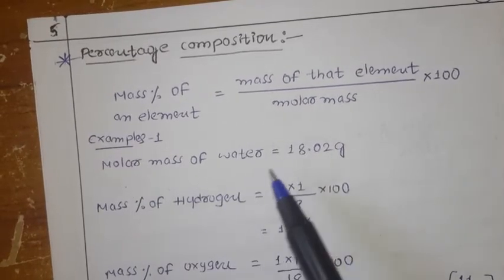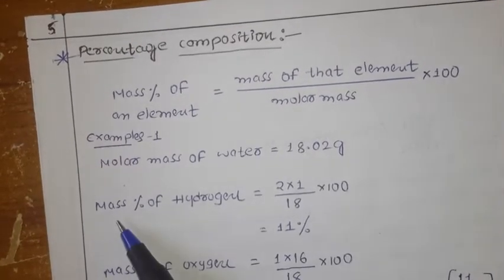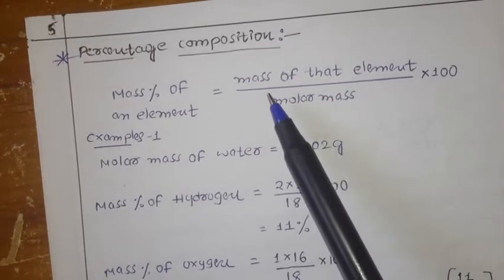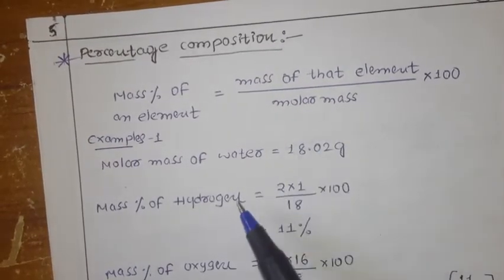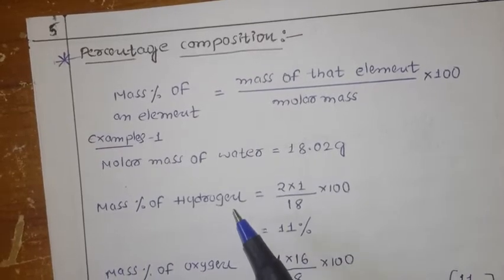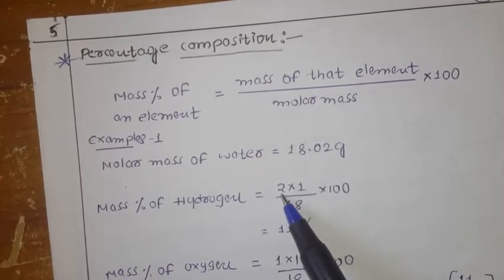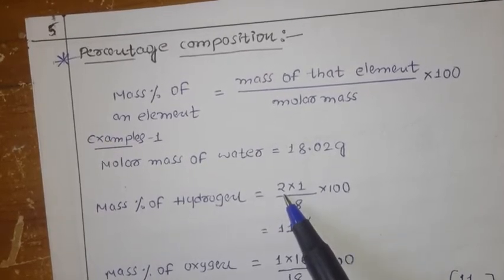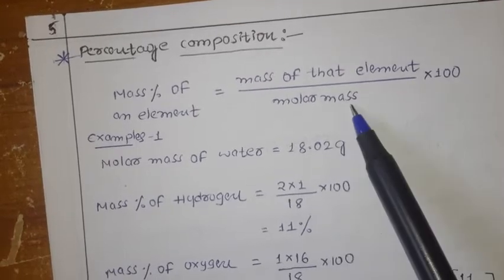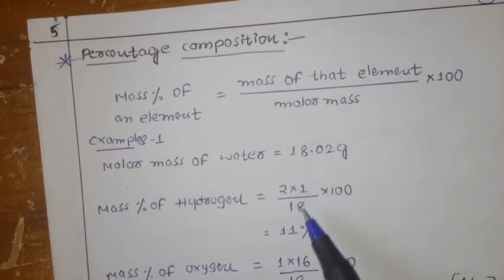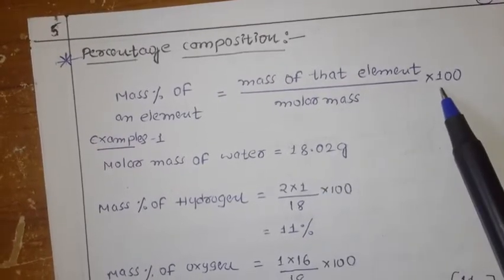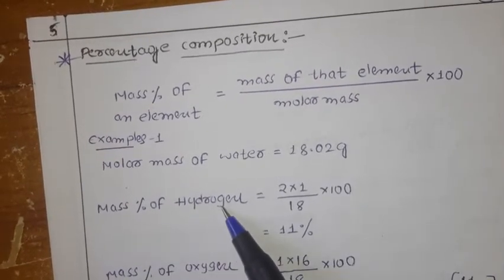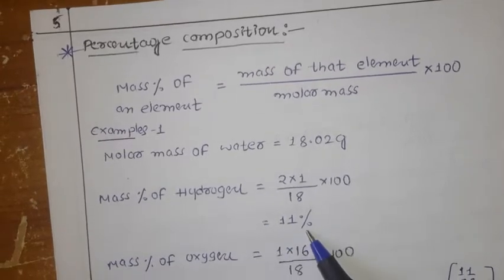The total molar mass of water is 18. Now, the mass percentage of hydrogen: the formula is mass of that element divided by molar mass into 100. Mass of hydrogen — there are 2 hydrogens, each with atomic mass 1, so 2 × 1 = 2. Divide by the molar mass of water, which is 18, into 100. So the percentage of hydrogen is 11%.